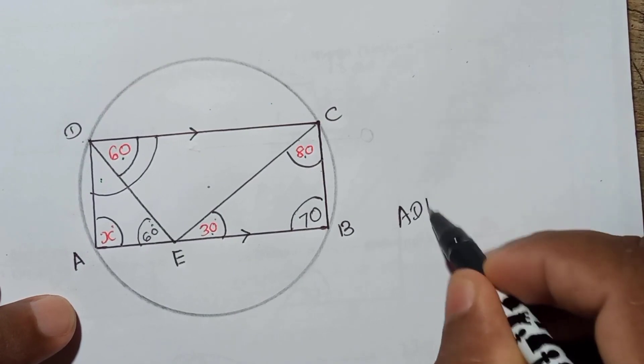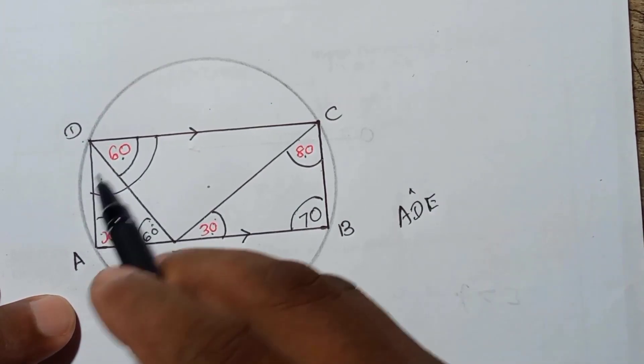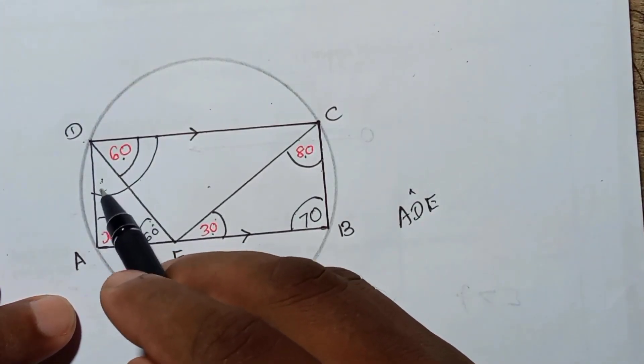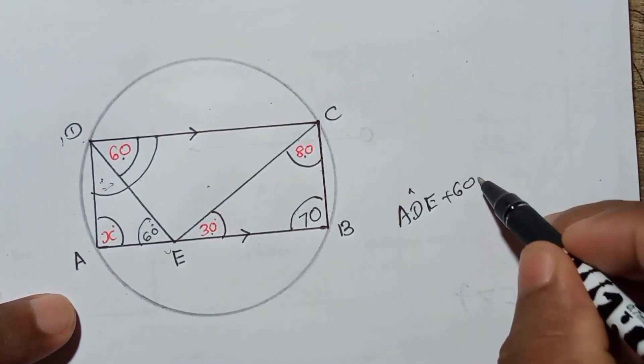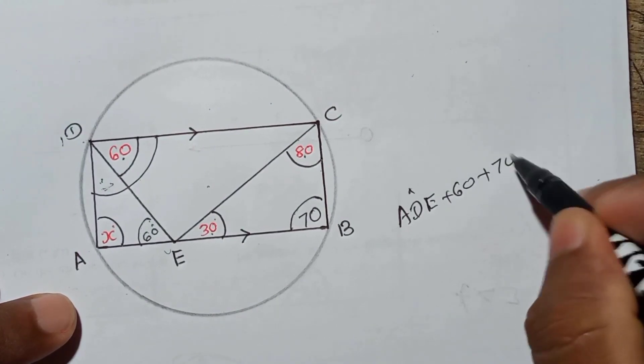So if you indicate this angle, you can write angle ADE, right? This angle, I mean this small one, angle ADE plus 60 plus 70 must be 180.